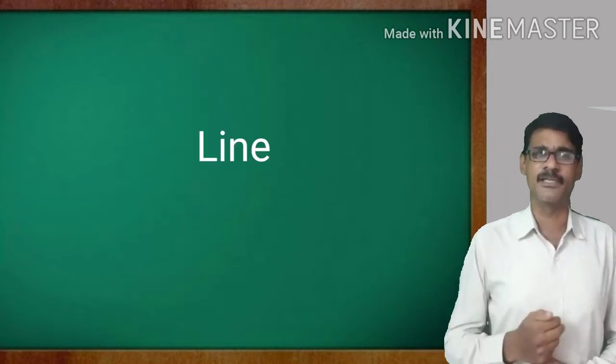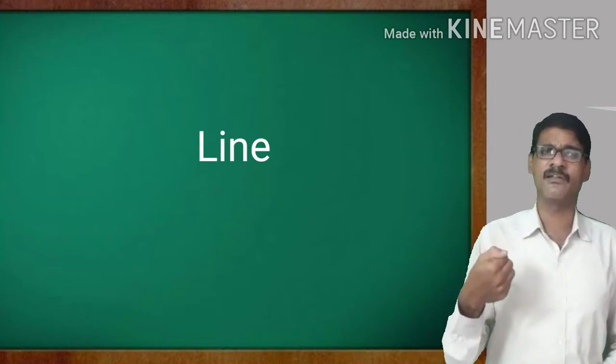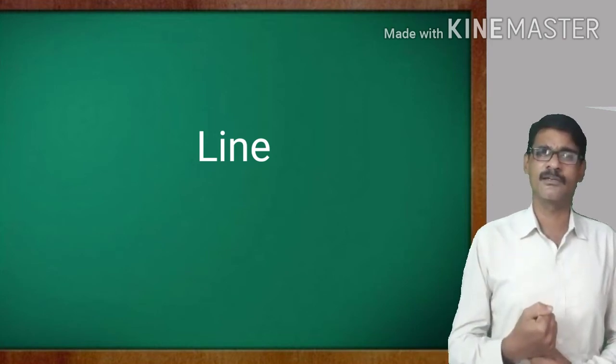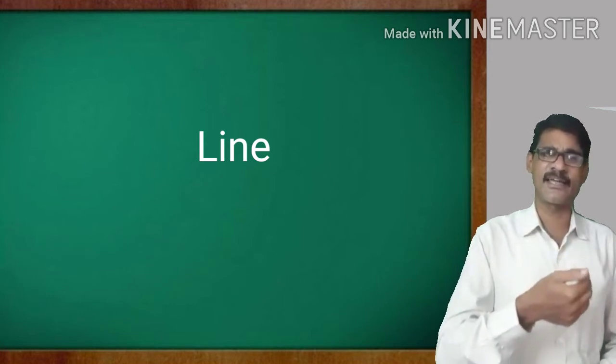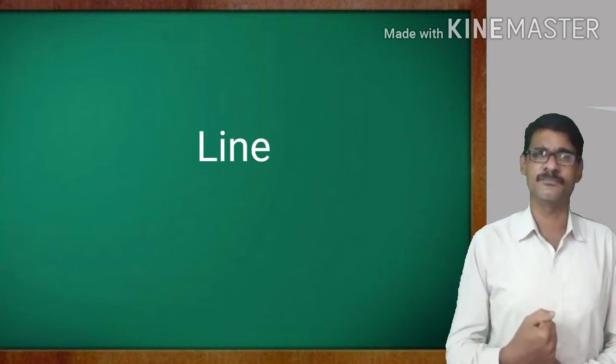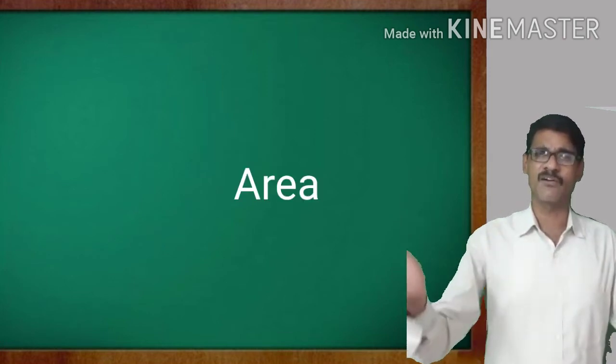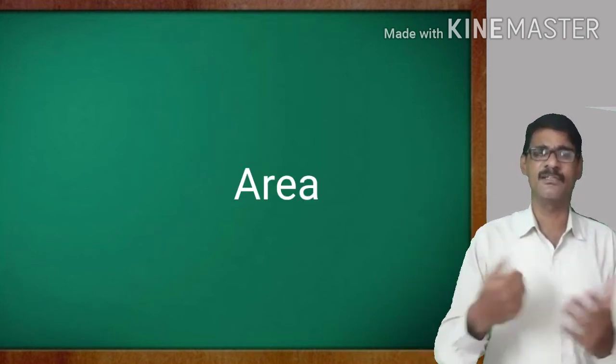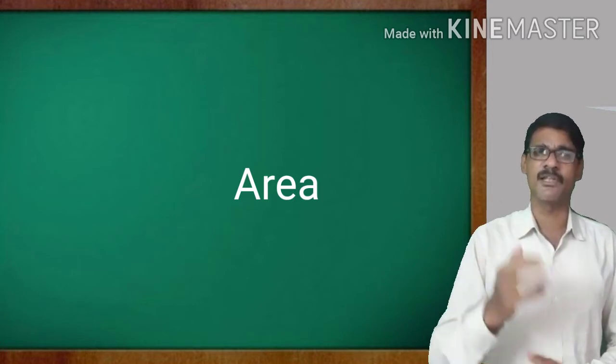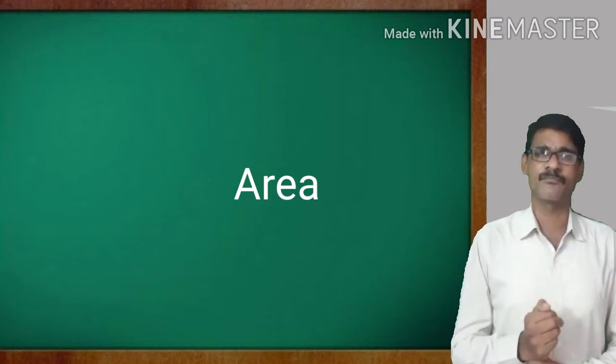This is an important symbol. The next one is the symbol, line. Generally, we are using the line symbol for the rivers in blue color. And we are using the track line, the railway track line. And sometimes, we should know about the area of our village, area of our state, area of our country. Then we are using the area symbol.